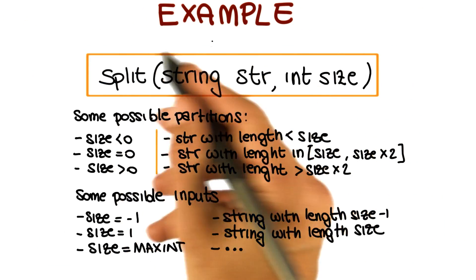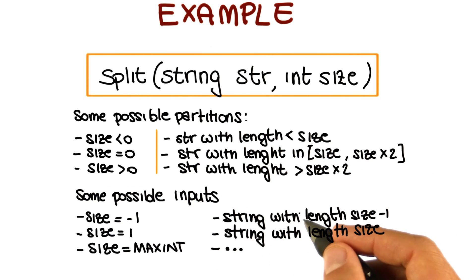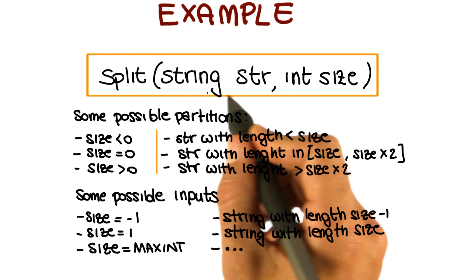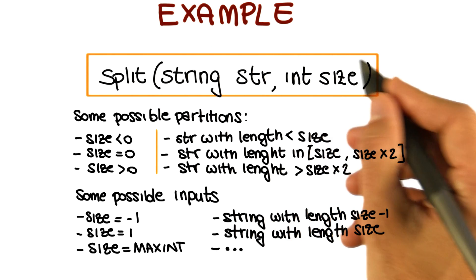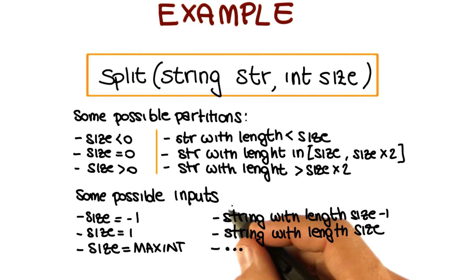So let me go back one more time to our split program so that we can use the information that we already computed. At this point what we have is some possible inputs for string, our first parameter, and for size, our second parameter. And we want to put them together to generate a description of what the test case should be.